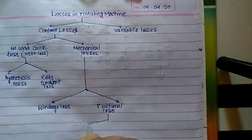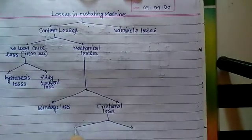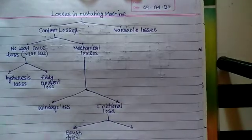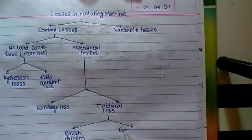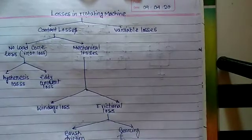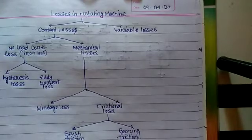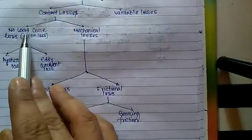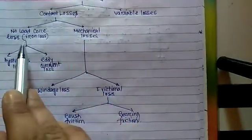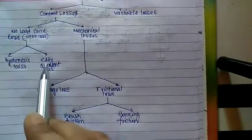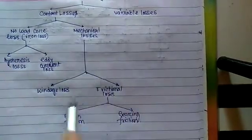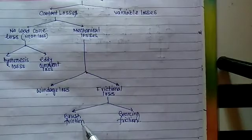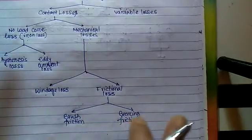Frictional loss has two parts: brush friction and bearing friction. So to summarize, constant losses comprise no-load core loss — with hysteresis and eddy current loss — and mechanical losses, which include windage loss and frictional loss.